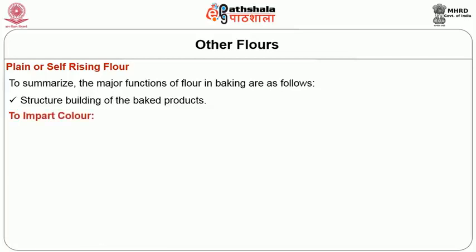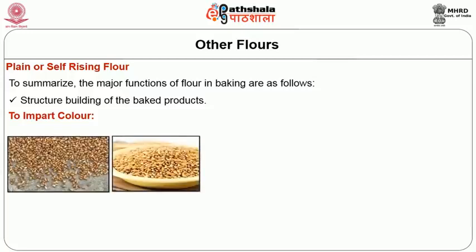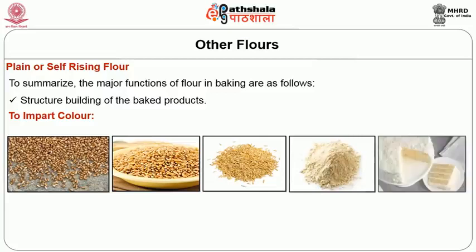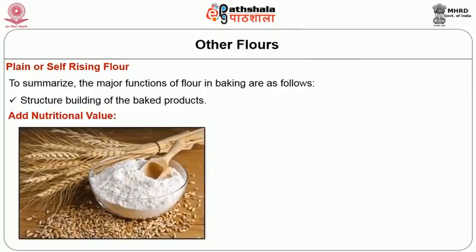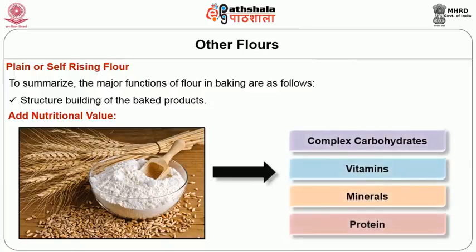To impart color: flours vary in color — whole wheat being nut brown, whole white wheat flour golden, durum pale yellow, unbleached white flour a creamy color, and cake flour a stark white color. These colors carry over to the color of the baked goods. Flour also adds nutritional value. Wheat flour and flour-based products contain complex carbohydrates, vitamins, minerals, and protein. Whole wheat flour is more nutritious than white flour.